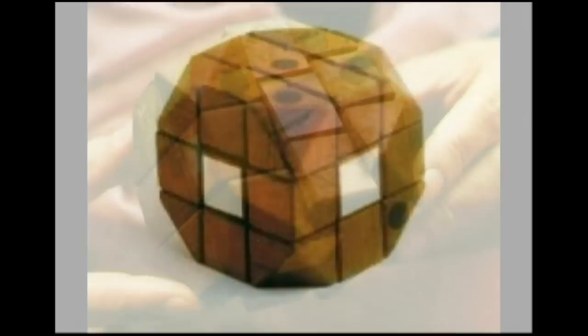Erno Rubik made the first fully working prototype of his cube in 1974 out of wood. Up until 2014, there were very few photos of this prototype available. As far as I know, these were the only three.